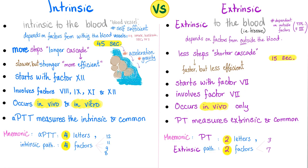The intrinsic pathway involves four factors — 8, 9, 11, 12 — and occurs both in vivo and in vitro, because the negative charges on the wet glass surface of the test tube can activate it. The extrinsic pathway has only factor 7 (plus tissue factor, factor 3) and occurs only in vivo, because we need tissue factor from tissue — and there is no tissue in vitro when we take blood and make it into plasma.